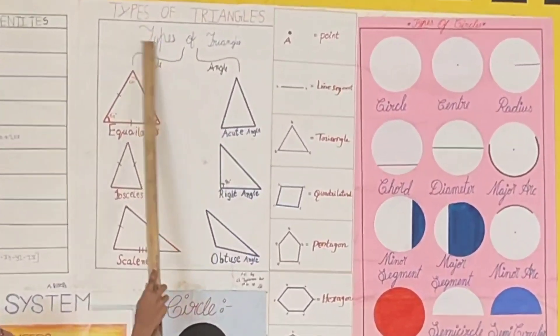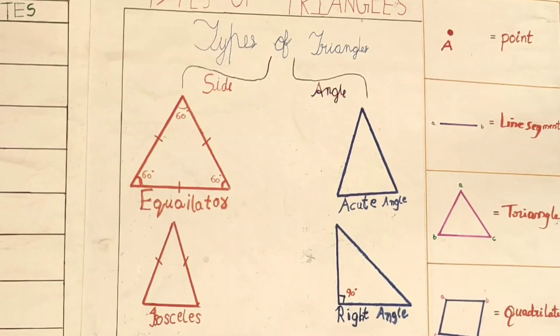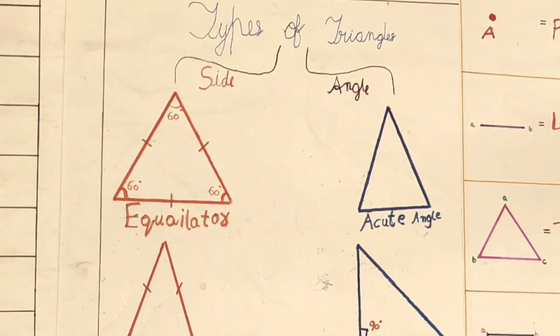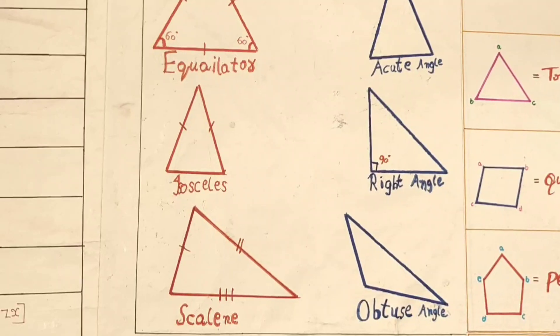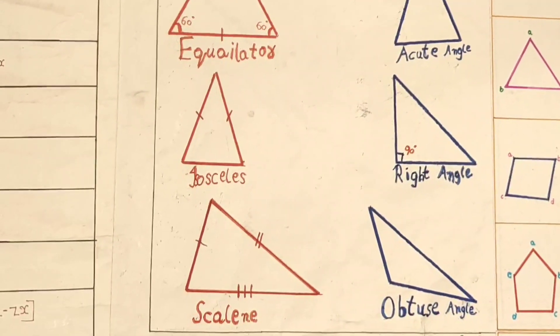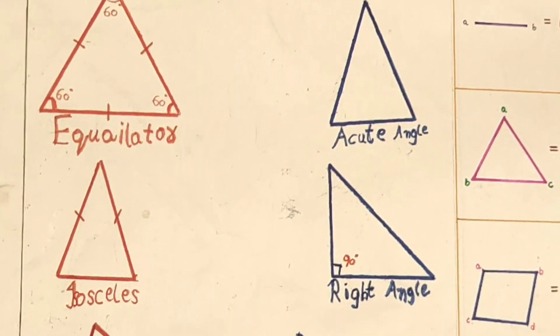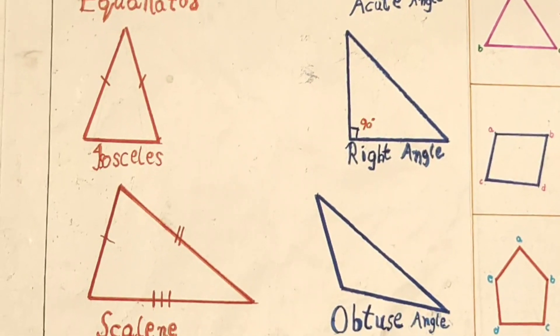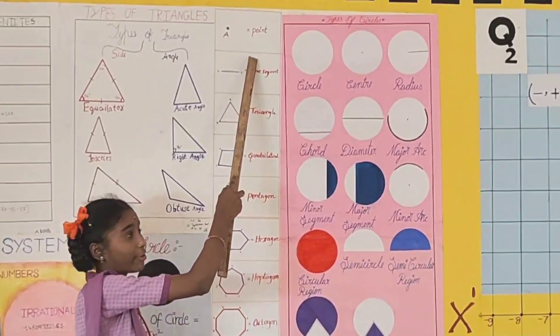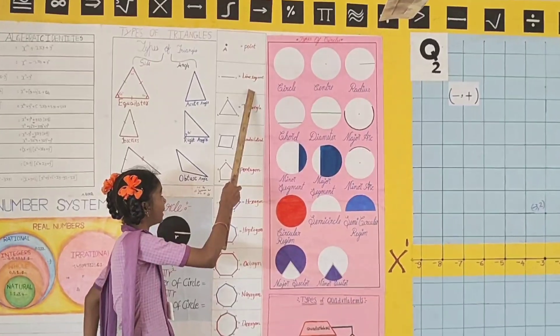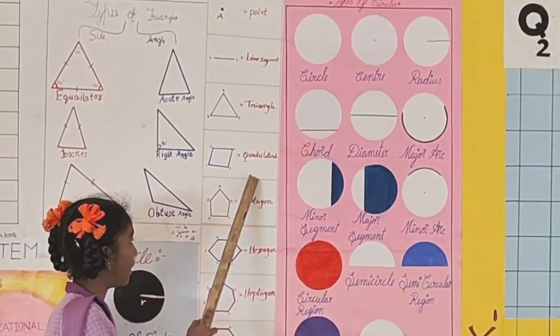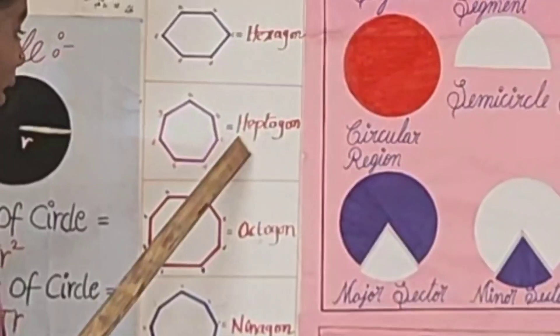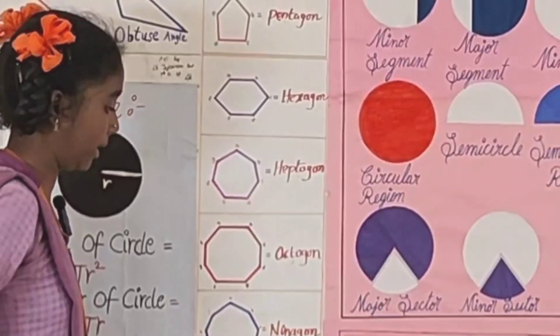Types of triangles are side-based triangles and angle-based triangles. Side-based triangles are equilateral triangles, isosceles triangles, scalene triangles. Angle-based triangles are acute-angle triangle, right-angle triangle, obtuse-angle triangle. These are two-dimensional figures: point, line segment, triangle, quadrilateral, pentagon, hexagon, heptagon, octagon, nonagon, decagon.